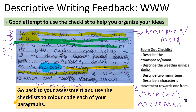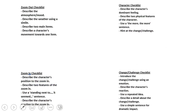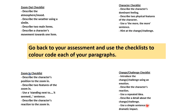So as you can see I've used that zoom out checklist to help colour code and label my zoom out paragraph. Now it's your turn. Here are the four checklists that you use for descriptive writing: zoom out, zoom in, character change and challenge. You need to go through your descriptive writing and use the checklist to colour code and label each of your paragraphs just as I have shown you. Pause the video and only come back when your descriptive writing is highlighted and labelled, please.